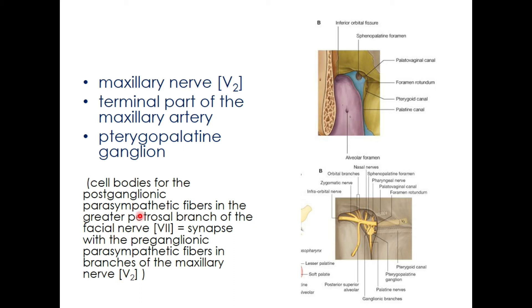The parasympathetic fibers of the greater petrosal nerve synapse in the pterygopalatine ganglion with the preganglionic parasympathetic fibers present in the branches of the maxillary nerve, which is also a content of the pterygopalatine fossa. In the diagram, preganglionic fibers can be seen entering the ganglion and postganglionic fibers leaving outside.